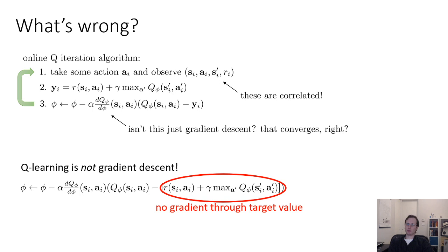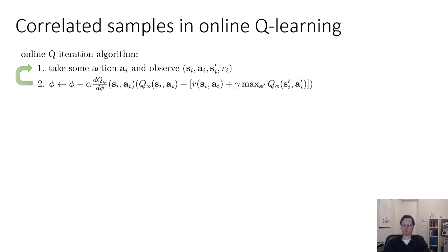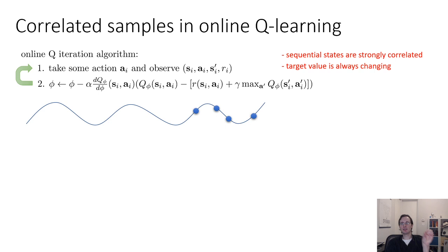The other big problem is that if you're running online Q-learning, the state that you see at the next time step is going to be similar to the state that you see at the previous time step. Even though step three looks like stochastic gradient descent, it's not actually correct stochastic gradient descent. Correct stochastic gradient descent requires you to sample your data point IID from your buffer. But the state action next state tuples you get here are anything but IID. They're strongly correlated, and that can cause big problems for stochastic gradient descent. Sequential states are strongly correlated and your target value is always changing. So this can get you into a lot of trouble. You might repeatedly overfit to those local correlated samples and never actually learn the true function.